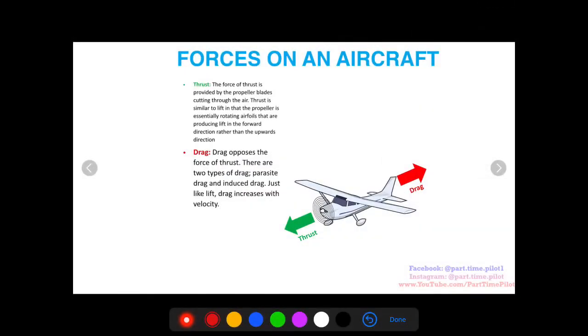The next force I want to talk about is drag. Drag opposes the force of thrust, so it acts in the opposite direction of thrust, or the direction the aircraft is moving. There are two types of drag, parasite drag and induced drag, and we'll get into those in a later video. But just like lift, drag increases with velocity. So the faster you move, the more drag you have.